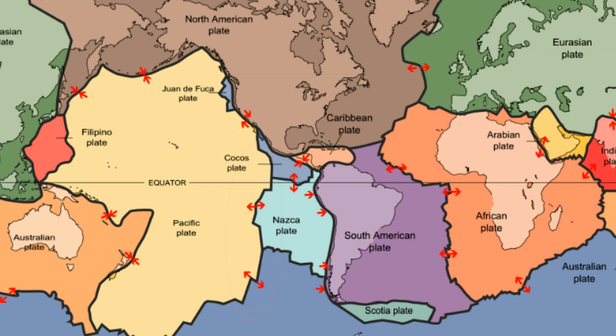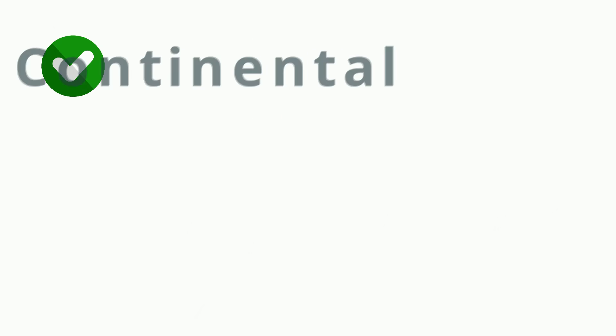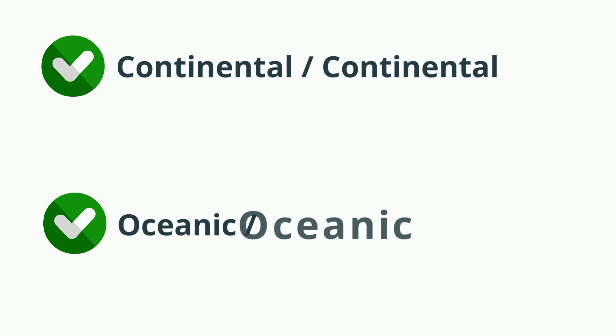If you look at the map of the major tectonic plates, you can see several divergent plate boundaries. There are two major types of divergent boundaries: Continental and continental lithosphere, and oceanic and oceanic lithosphere.